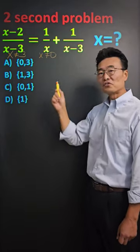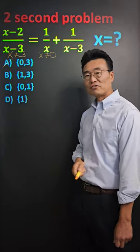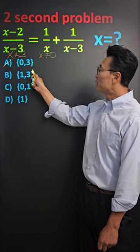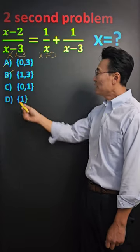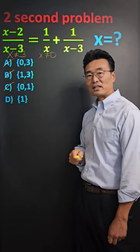So any answer choice with a 3 or a 0, we're going to eliminate. Here we have a 0 and a 3, so definitely A is no good. We have a 3 here, which means that B is not going to be our answer. And answer choice C has a 0, which means that C is not going to be our answer.